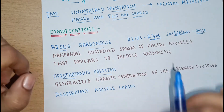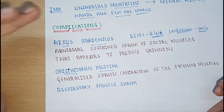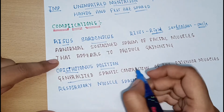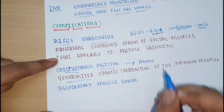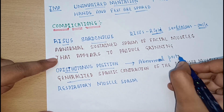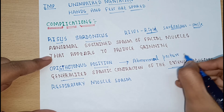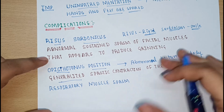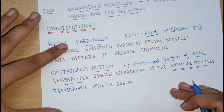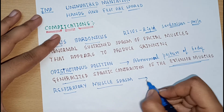The actual definition of risus sardonicus: it is an abnormal sustained spasm of facial muscles that appears to produce grinning. The second complication is associated with generalized muscle spasm — opisthotonus position. This is an abnormal posture of the body in which there is spastic contraction — prolonged abnormal contraction — of the extensor muscles. The person has great difficulty in movement and feels significant pain. The third complication is paralysis of the respiratory muscles, which leads to difficulty in breathing.